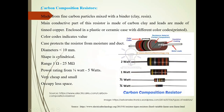Now we will discuss carbon composition resistors. These resistors are made from fine carbon particles mixed with a binder, clay, or resin. The main conductive part of this resistor is made from carbon clay, and the leads are made of tin copper.